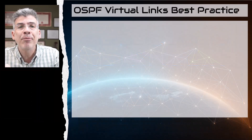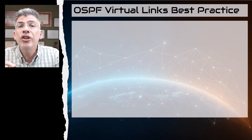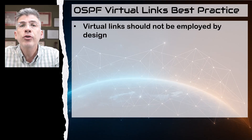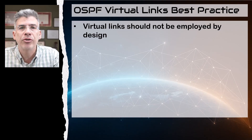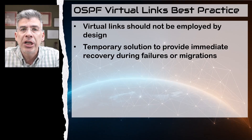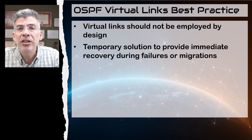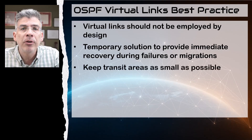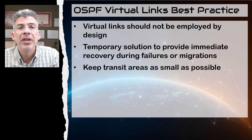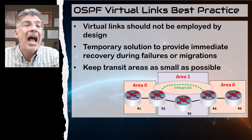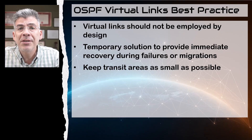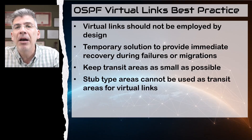A quick note about best practices when using virtual links. They should not be configured as a matter of course — don't plan on creating virtual links as part of your topology. Virtual links should be used as a temporary solution to immediately resolve issues due to failures or due to migrations or merging of multiple networks. The OSPF areas used as transit areas should be as small as possible, with as few intermediate routers as possible to ensure robust communication between connected ABRs. Also, transit OSPF areas must not be stubby — they shouldn't be any type of stub area.